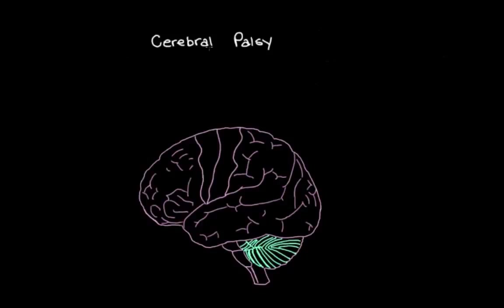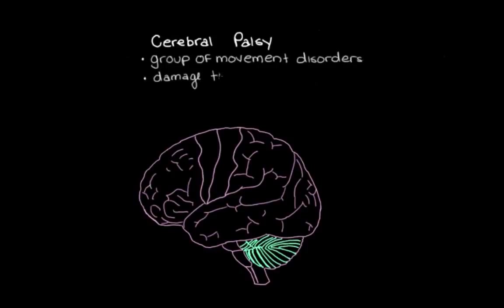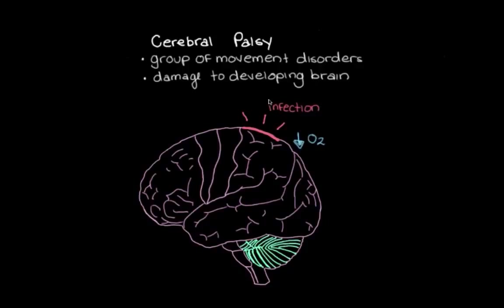Cerebral palsy is an umbrella term used to describe a group of disorders that affect a person's ability to move in a normal way. It occurs because of damage to the developing brain, maybe caused by an infection or loss of oxygen. This damage usually occurs during early development, anywhere from in utero to about toddlerhood. The damage is permanent, but it's not progressive — the initial brain damage doesn't worsen over time — but the problems with movement do persist for the affected person's entire life.